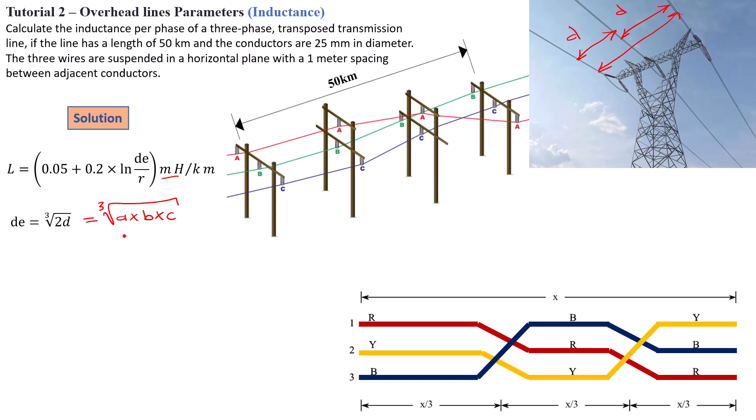Right now, having said that, we can now go ahead and calculate dE. In this case, it's going to be equal to the cubic root of 2 times 1, because our d here is equal to 1 meter spacing. Then we're going to get the dE of 1.26 meters.